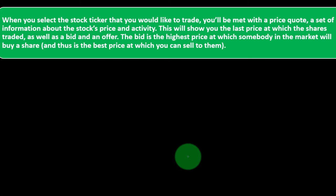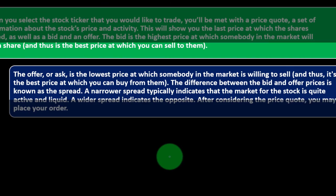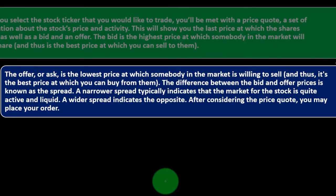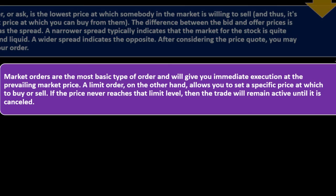The price quote shows the last price at which shares traded, as well as a bid and an offer. The bid is the highest price at which somebody in the market will buy a share — the best price at which you can sell. The offer, or ask, is the lowest price at which somebody is willing to sell — the price at which you can buy from them. The difference between the bid and offer prices is known as the spread. A narrower spread typically indicates the market for that stock is quite active and liquid.